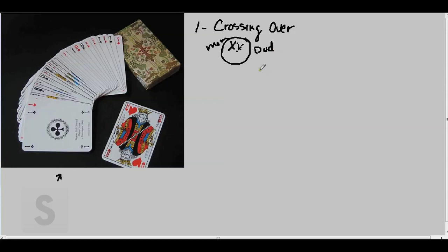During prophase one of meiosis, our homologous chromosomes pair up. When this happens, they get very close to one another. So close, in fact, that they bump into one another and form what is known as a chiasma.